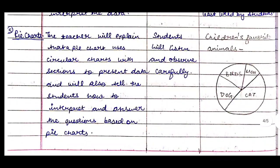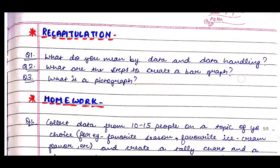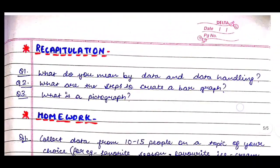Next comes pie chart. The teacher will explain that a pie chart uses a circular chart with sections to present data, and will also tell students how to interpret and answer questions based on pie charts. Students will listen and observe carefully, and the teacher will draw a pie chart on the board showing children's favorite animals.